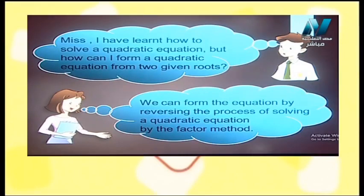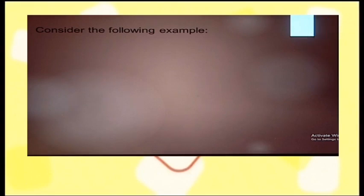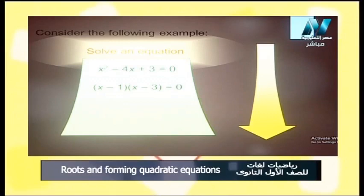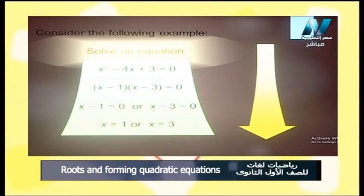So let us consider the following example. The example is: solve the equation x² minus 4x plus 3 equals 0. We factorize: x minus 1 multiplied by x minus 3 equals 0, so x minus 1 equals 0 or x minus 3 equals 0. Therefore x equals 1 or x equals 3.